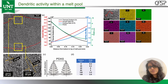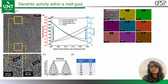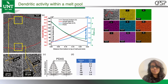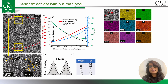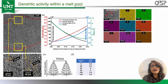At the microstructural level, we observe that the primary dendritic arm spacing becomes finer towards the top of the melt pool, which tells us the cooling becomes slightly faster. Finer dendrites restrict the formation of martensitic laths, trapping more dislocations — and that's why the upper regions are harder and more stressed.